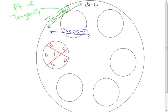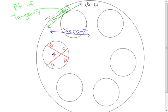Now in this next one, I have two secants, or think of it as two chords. They're intersecting inside the circle, and they're not intersecting at the center — they're intersecting at some point in the circle, and they're going to create angles. We're going to look at the measure of angle one.